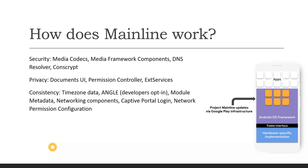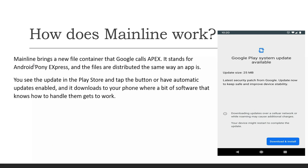Mainline brings a new file container that Google calls APEX — Android Pony Express. These files are distributed the same way an app is distributed. You see an update in the Play Store and you tap on the button, or you have automatic updates enabled in your settings. When you tap that Play Store button, it downloads the APEX file to your phone. You can see a screenshot showing the message: 'Google Play system update available' — you just click that button and the APEX file is downloaded.